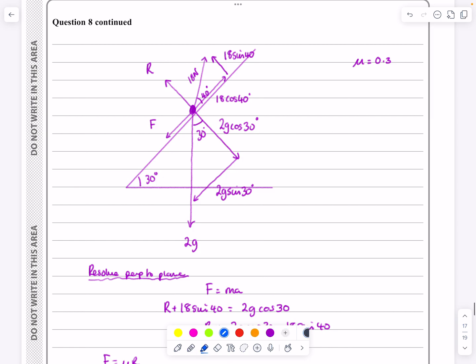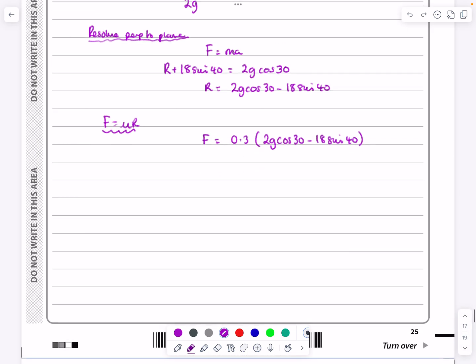So now we said, okay, parallel to the plane, what forces do I have? Well, I've got my f, I've got my 18 cos and I've got my 2g sin 30. But we know, I should put this on at the start, but I can put it on now. We know that it's accelerating up the plane. It's moving up the plane there. So if it's moving up the plane, then this 18 cos 40 is going to be bigger than the other two. So when I do my f equals ma now, I can do all that.